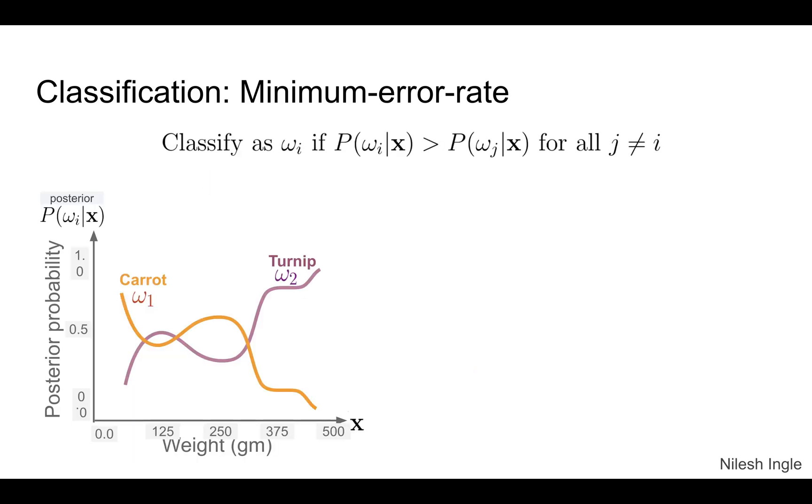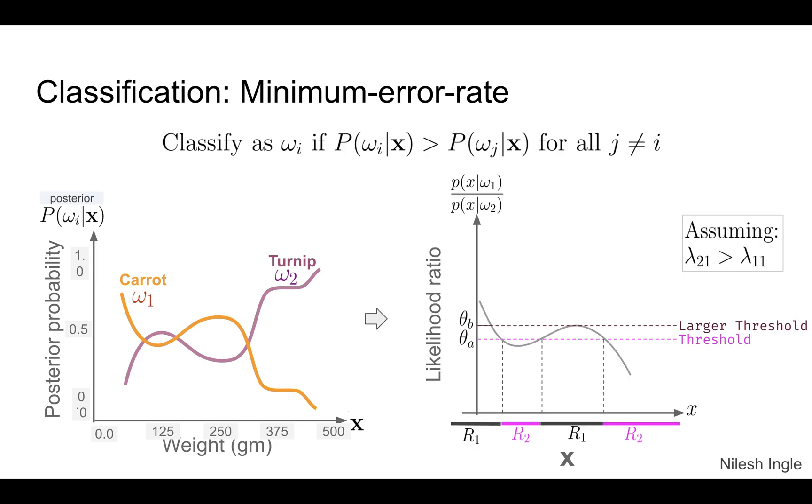For minimum error rate, if we look at this particular plot on the left-hand side which shows the posterior probability, we can compare it with the plot on the right-hand side which is for the likelihood ratio.